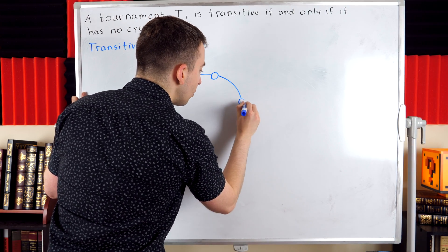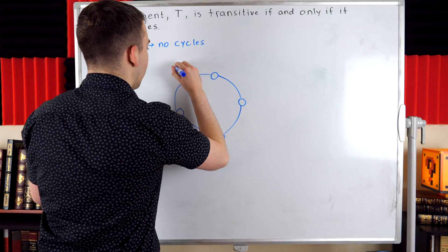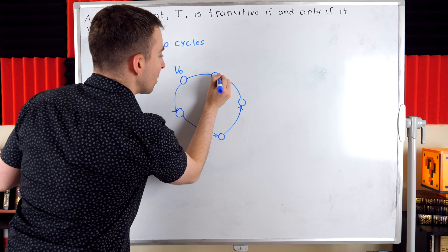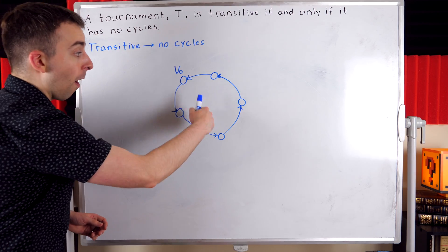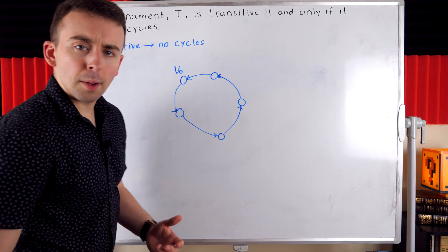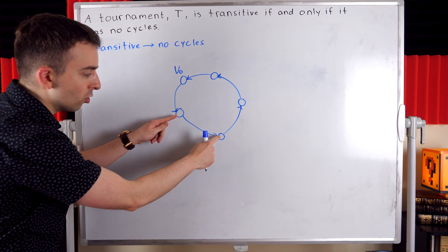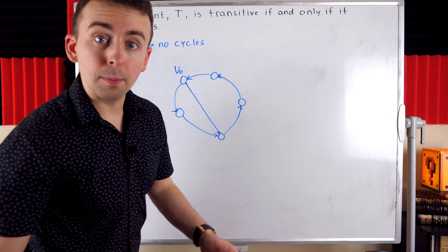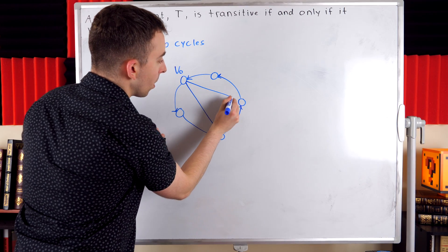This is going to end up being a contradiction proof, so let's draw a cycle. Suppose our transitive tournament has a cycle that looks something like this, and maybe we call this vertex here V-zero. I should add direction to these edges since we're talking about tournaments, which are directed graphs. There are some arcs here that we're not drawing because we're just focusing on the cycle. But if our tournament is transitive, what are some of those arcs that have to be here? Well, V-zero is adjacent to this vertex, and this vertex is adjacent to this one, so since the tournament is transitive, V-zero needs to be adjacent to that vertex.